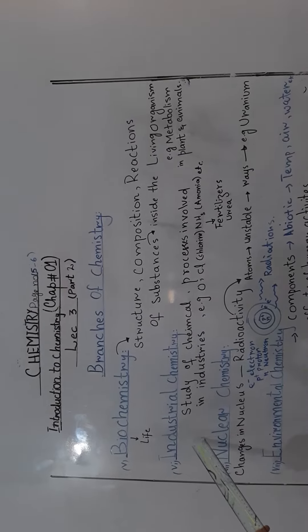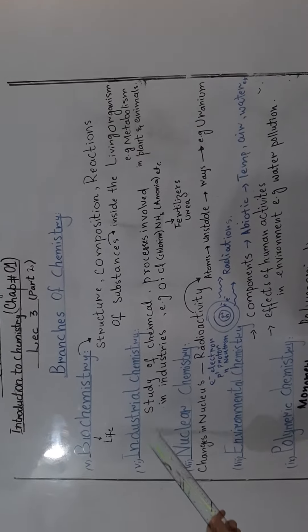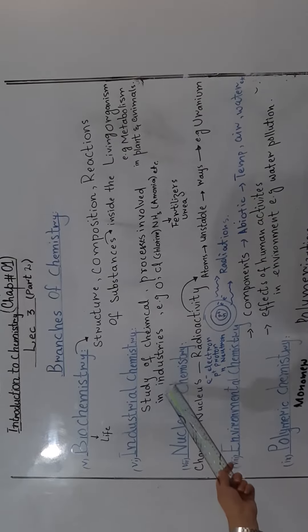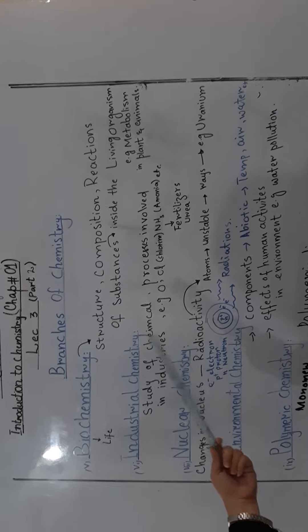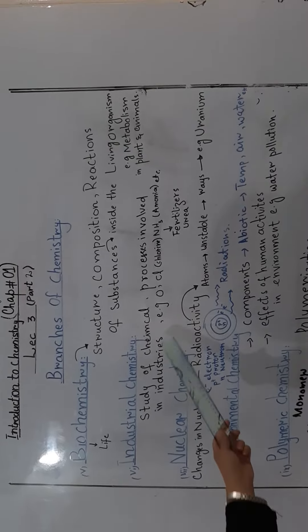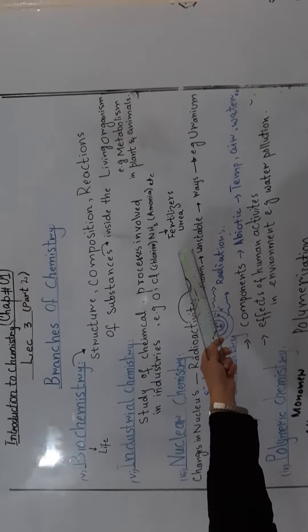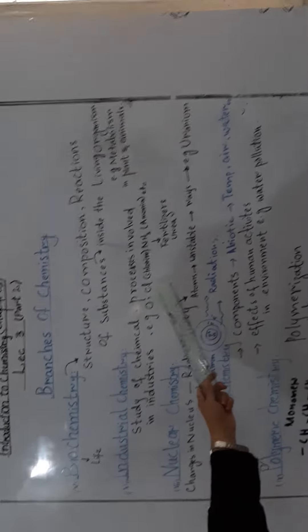Next branch is industrial chemistry. What is the study of chemical processes which are involved in the industry to produce different chemicals, which are very useful things to produce, for example, oxygen, chlorine, ammonia, which are called fertilizers, urea, soda ash, glassware, etc.